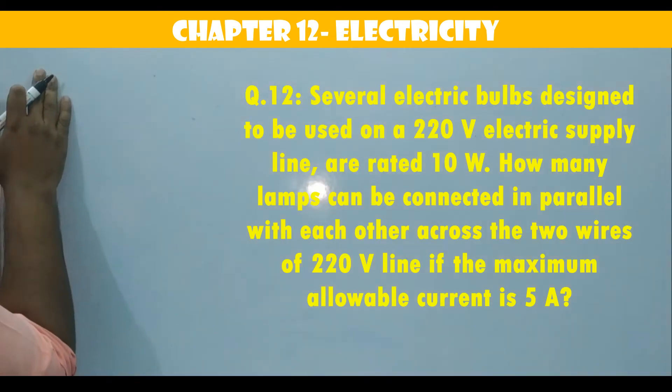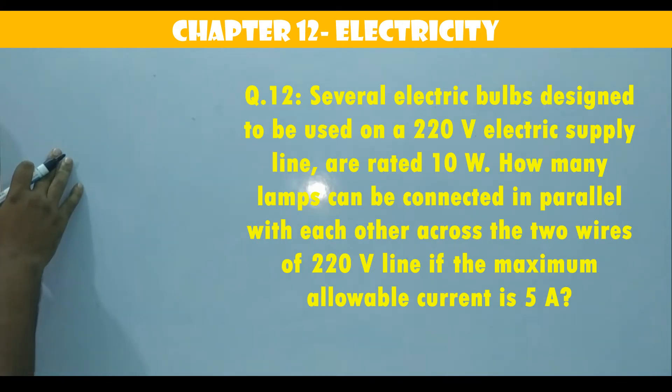Next, exercise number 12. Several electric bulbs designed to be used on a 220 volt electric supply line are rated 10 watt. How many lamps can be connected in parallel with each other across the two wires of 220 volt line if the maximum allowable current is 5 ampere.